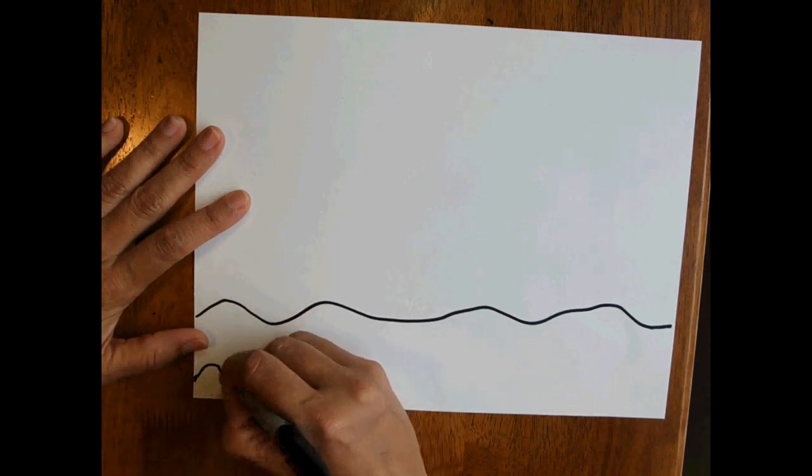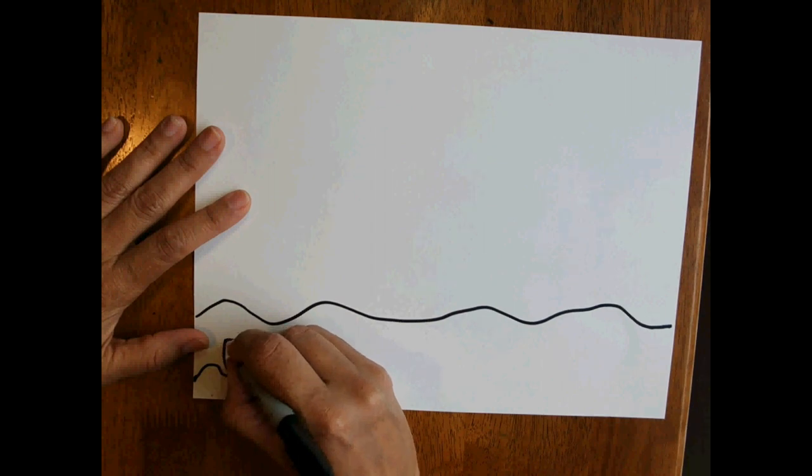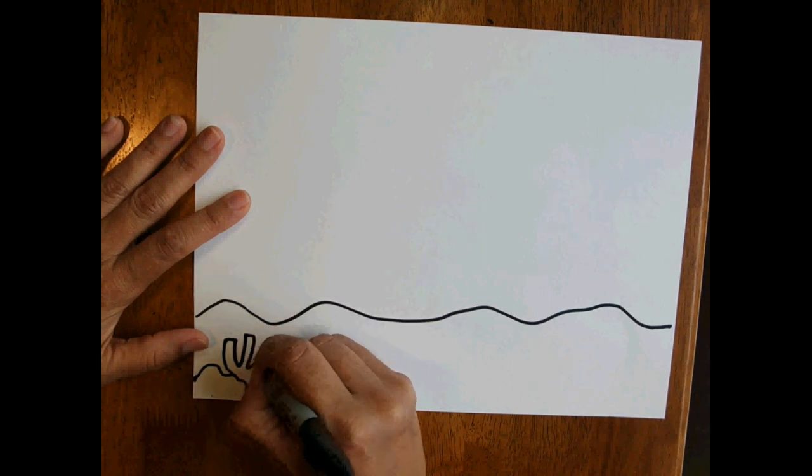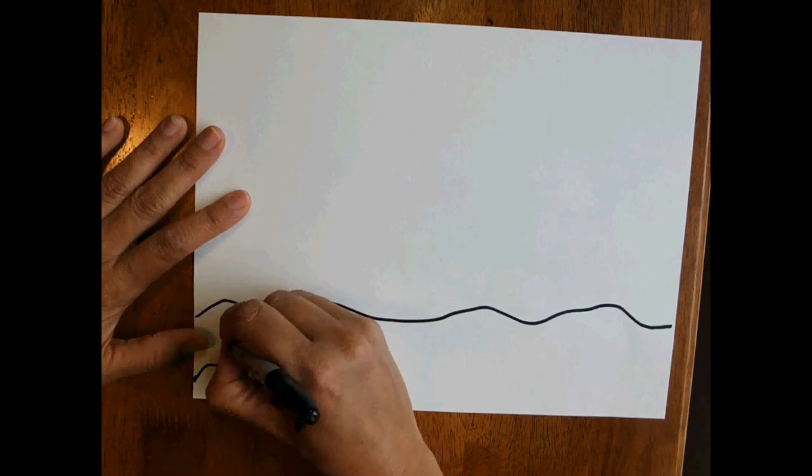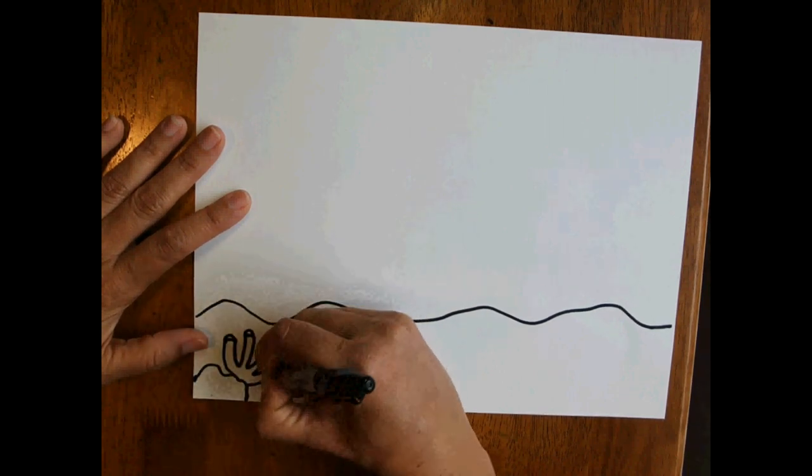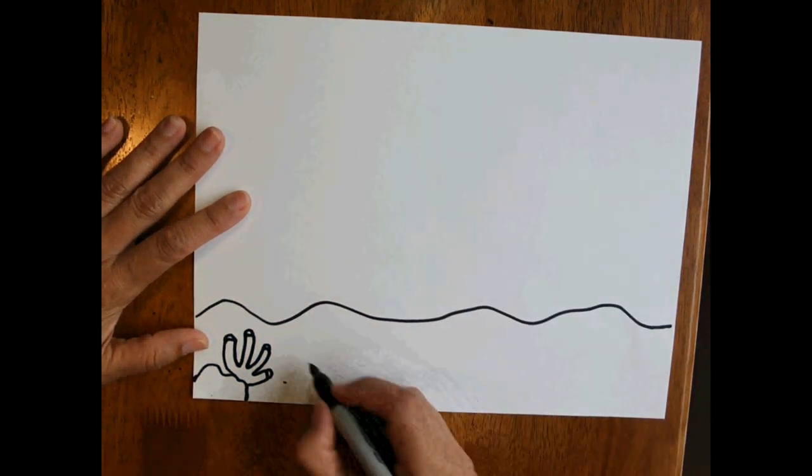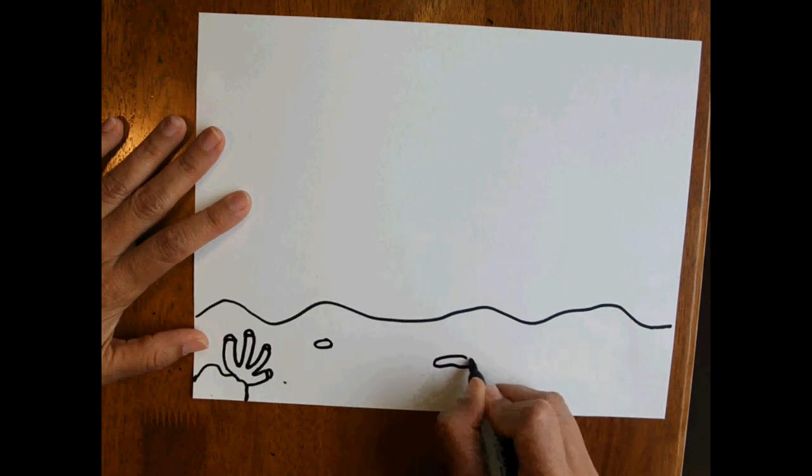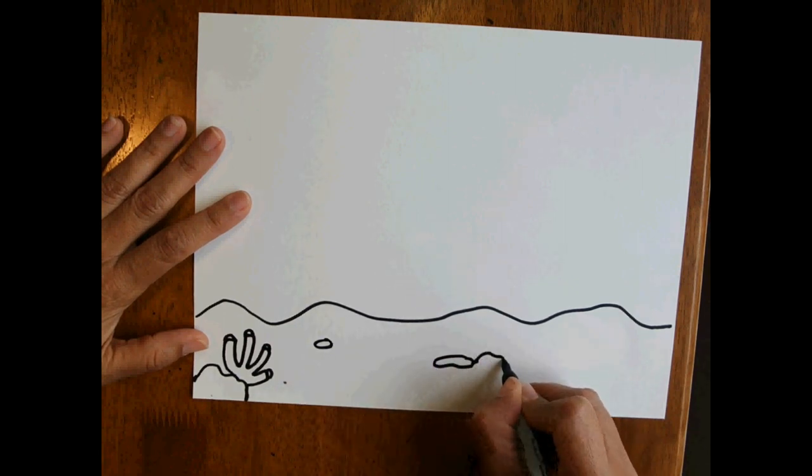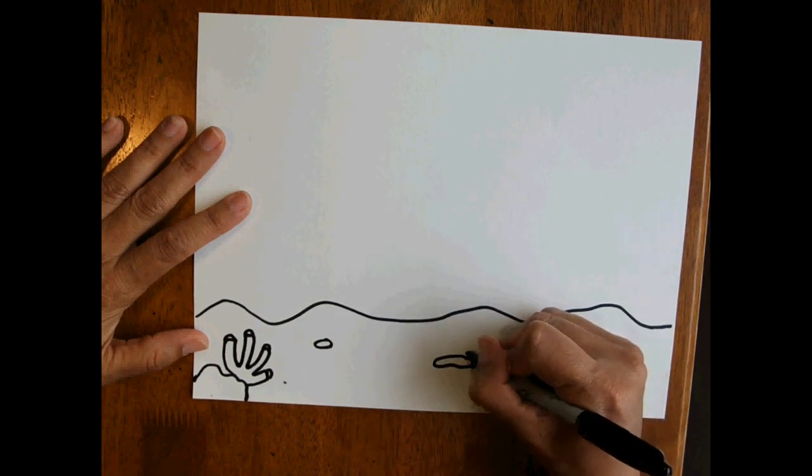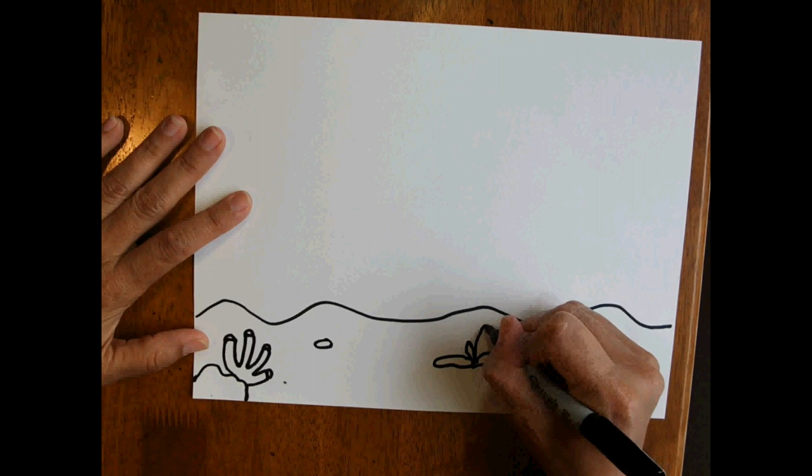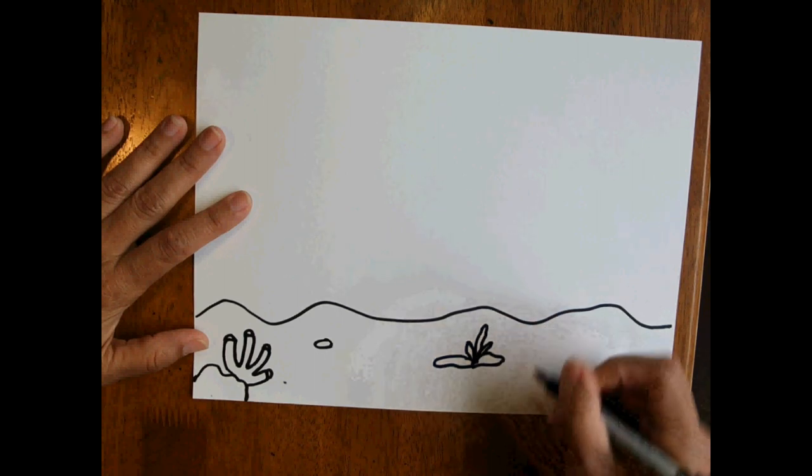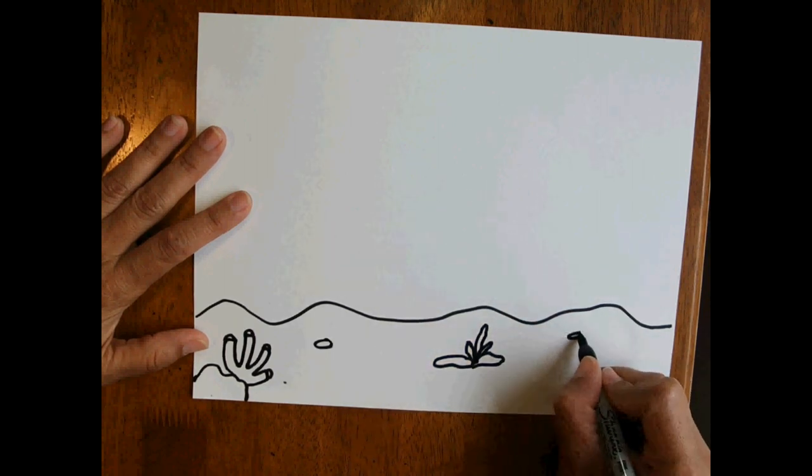And I'm going to create some coral here. I'm going to add some curvature here to make it look like coral. All right. And I'm going to do a rock here, maybe two rocks here.